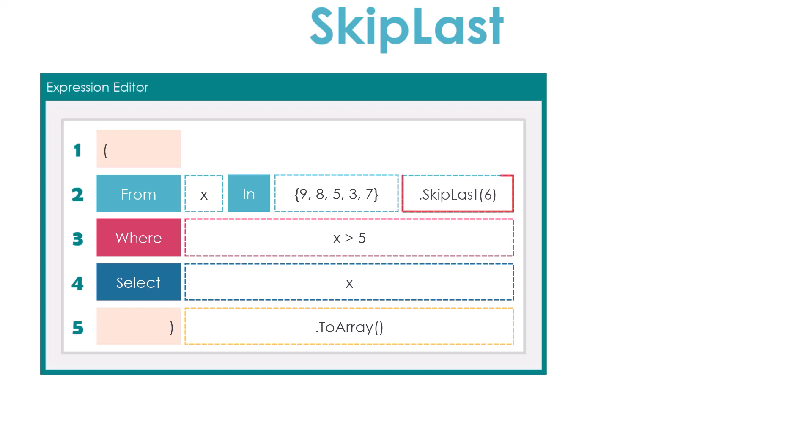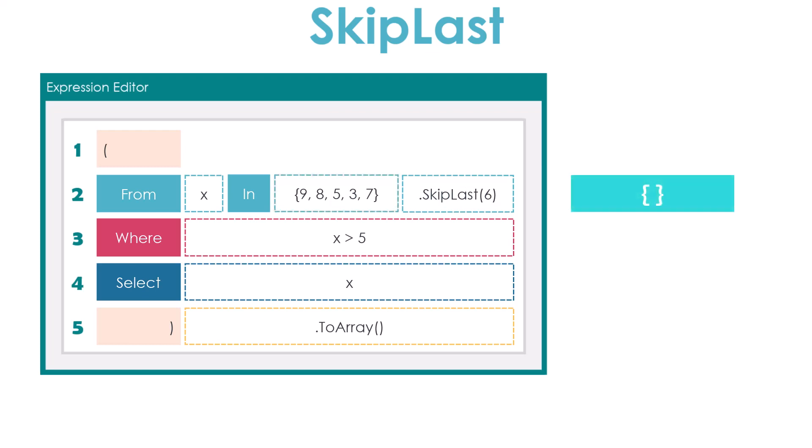Let's now see a query where I use Skip Last with number six. As you can see I have only five numbers in the array. What will happen? This operator returns an empty collection because the sequence contains only five numbers and we want to skip the last six. It means we don't get an exception even though the number is greater than the count of elements — the operator simply skips all elements. So if the skip count equals or exceeds the number of elements in the sequence, all elements are skipped and the output will be an empty array of type integer.